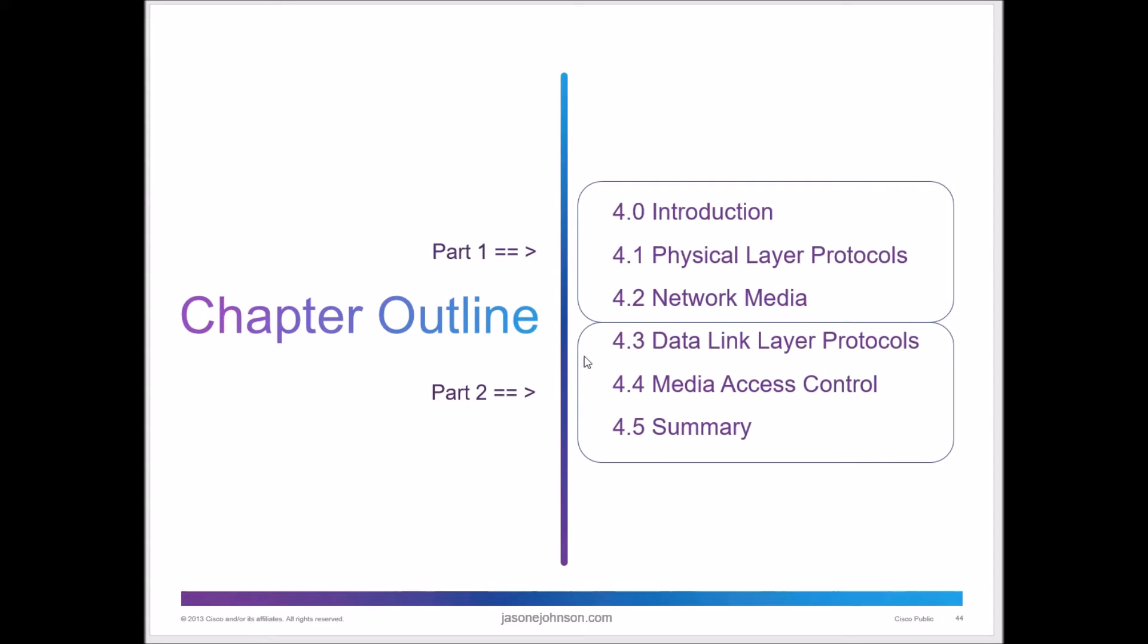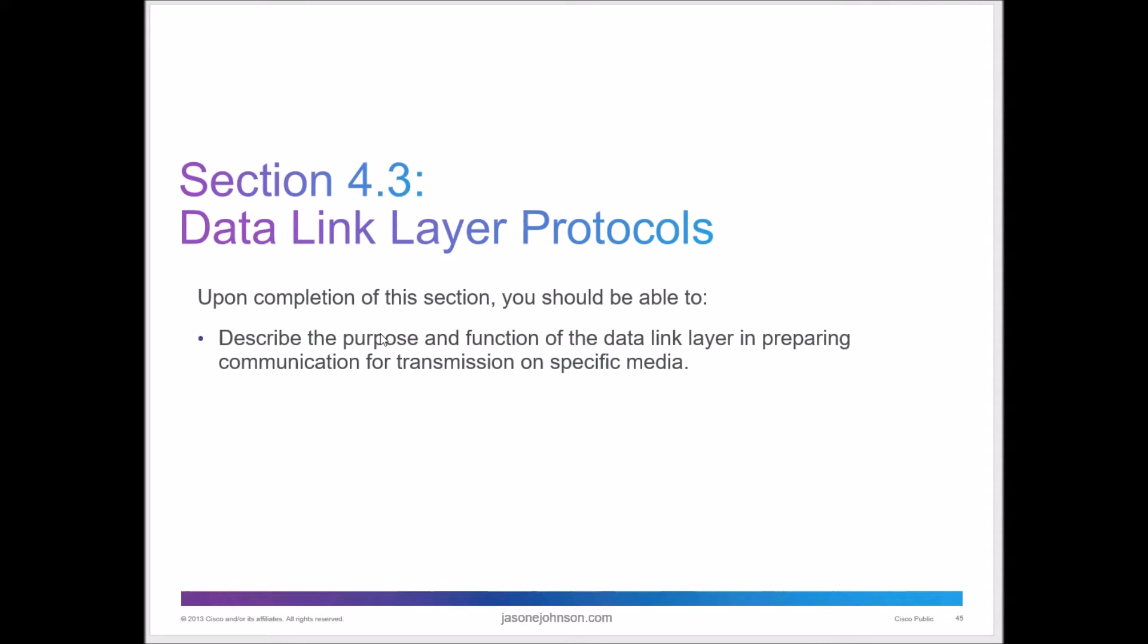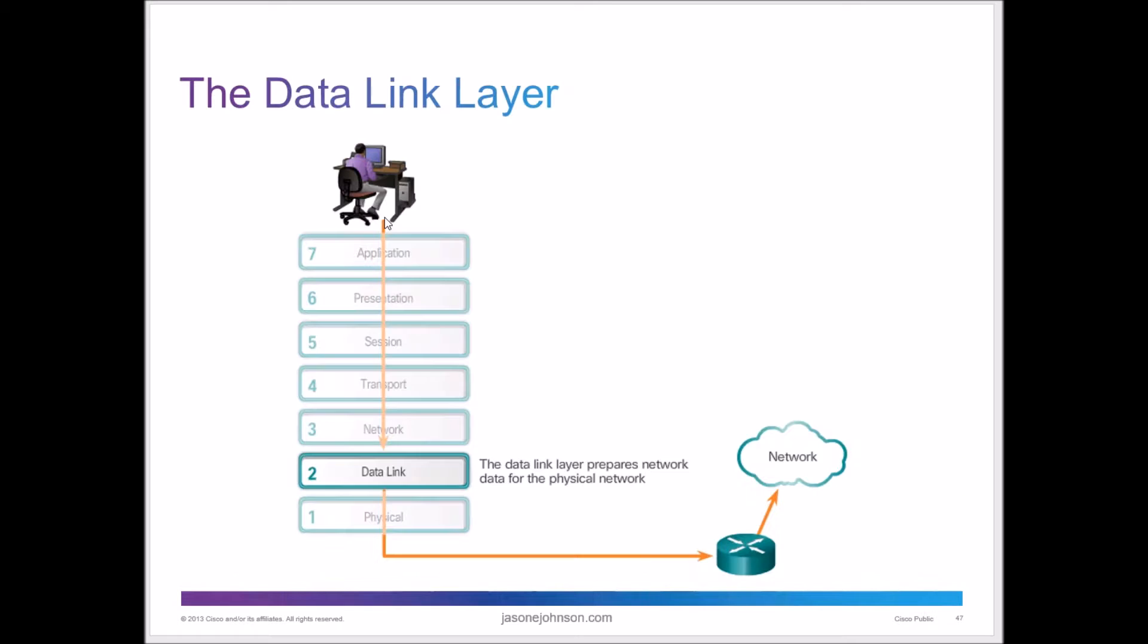Part 2 of 2 for chapter 4 is going to cover the data link layer protocols and the media access control. So what are the data link layer protocols? As you remember, we have protocols set for when we do networking and those protocols allow media to be able to talk with each other or nodes to be able to talk with each other properly. So we have to speak the same language. The data link layer is the next layer in this OSI layer that we're dealing with.